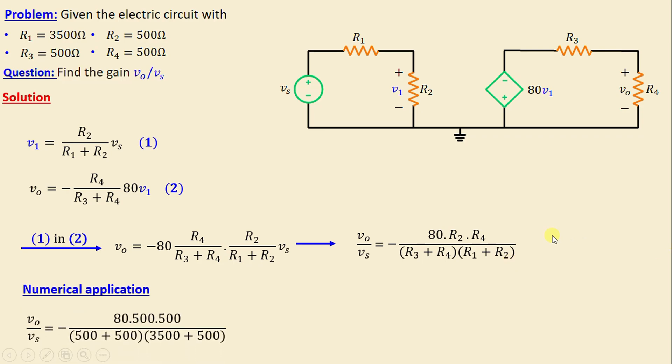By substituting the resistors with their numerical values, we have vo/vs = -80 × 500 × 500/[(500 + 3500)(3500 + 500)].